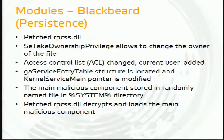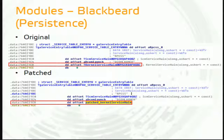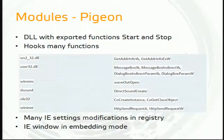Persistence is achieved by patching rpcss.dll. The take ownership privilege allows the malware to become the owner of the file, then modify the access control list. It locates important structures within the file and modifies pointers that specify the entry point to the library — the structure named 'GaServiceEntryTable' with 'KernelServiceMain' as the main entry function. When the file is patched, a short stub is added that loads the rest of the payload from a randomly named file in the system directory, decrypts it, and loads the main module.